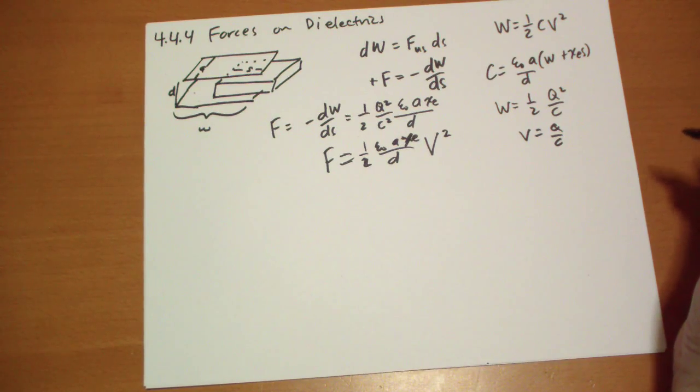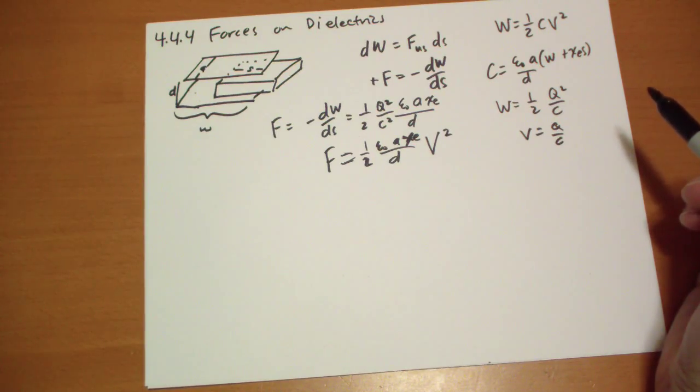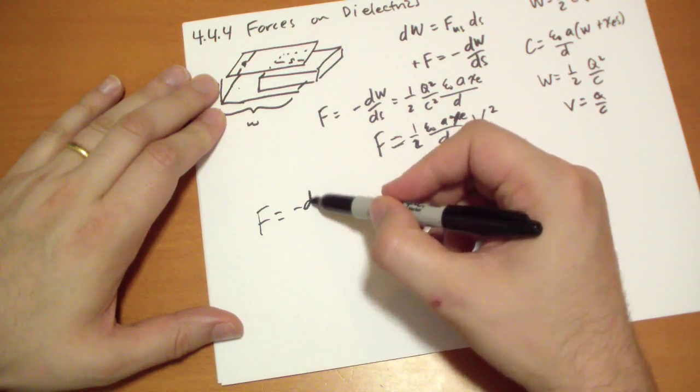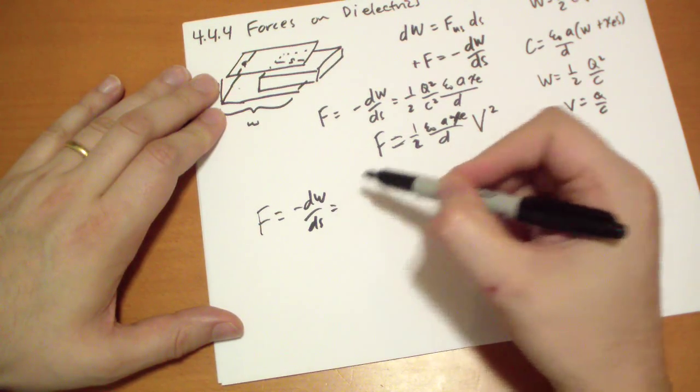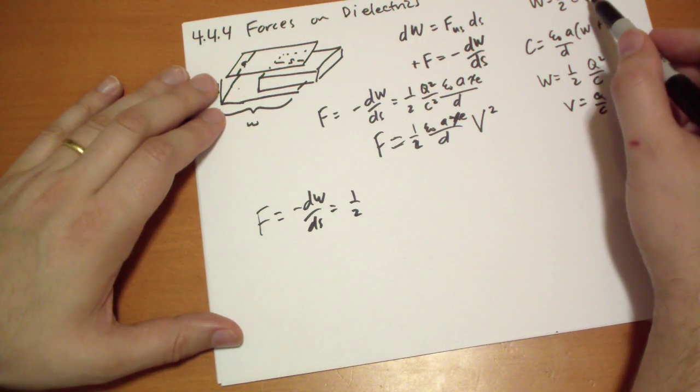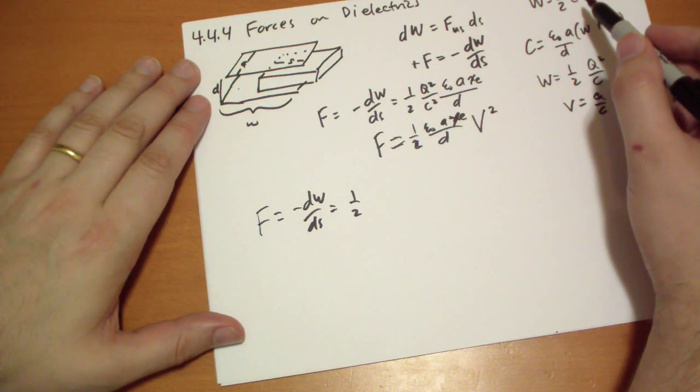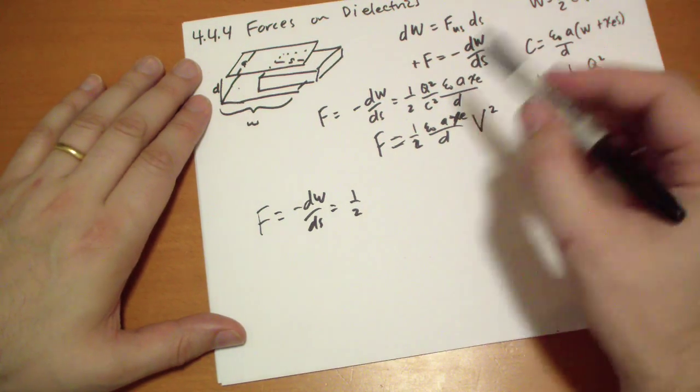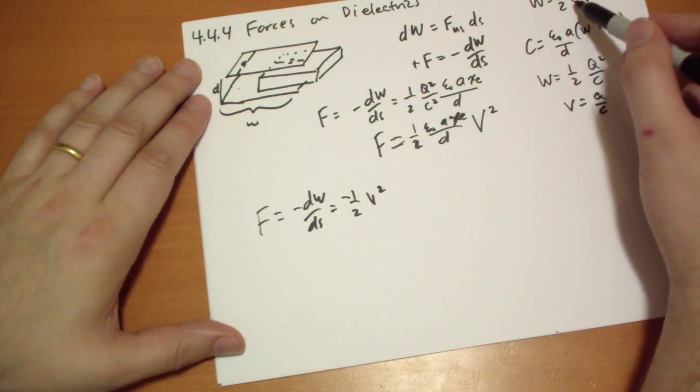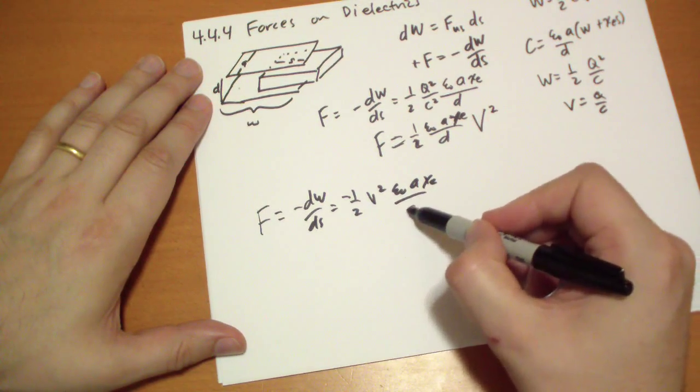Now, let's suppose you did it the wrong way. So you said, I'm going to take this formula, and we are going to calculate the force using that one. So we have the force is equal to minus dW by dS. So that's one-half. The capacitor changes. The potential changes. So V squared. Hold on a second. No, V squared. The potential doesn't change. It's constant. V squared. We have the negative sign here. And dC by dS. Well, dC by dS is just epsilon-naught A chi-E over D.